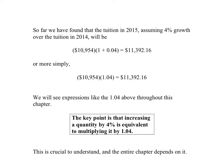Welcome back to Math 103. This is video number two on growth in finance. So far we have found that the tuition in 2015, assuming a 4% growth over the tuition in 2014, will be the old tuition times 1 plus 0.04. To put this expression more simply, that's $10,954 times 1.04, which equals the new tuition.